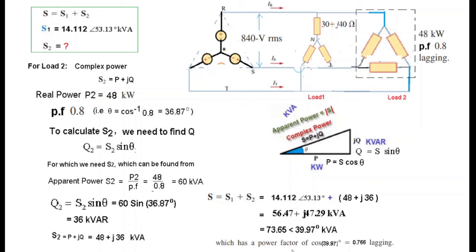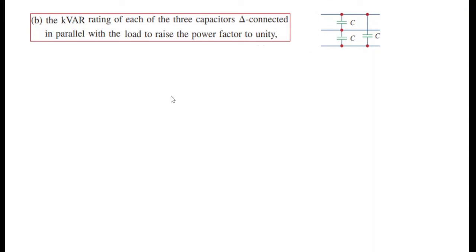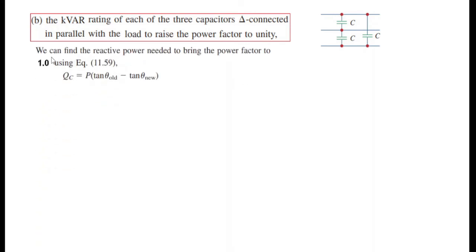Power factor is 0.76, cosine of the angle. To find the kVAR rating of each of the three delta-connected capacitors in parallel with the load, we need to raise the power factor to unity (1). We find the reactive power needed using the formula for Qc.